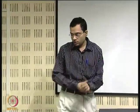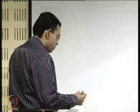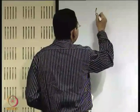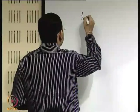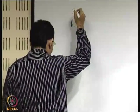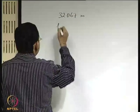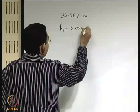We continue with our discussions on hydraulic machines. We were discussing centrifugal pumps and let us work out a couple of problems before proceeding further. A centrifugal pump lifts water against a static head of 32.067 meter, out of which 3.054 meter is the suction lift.